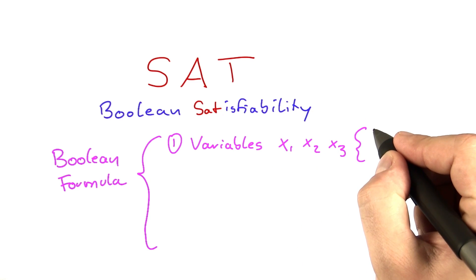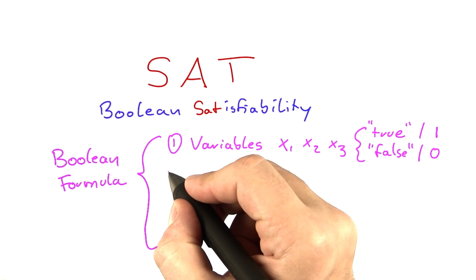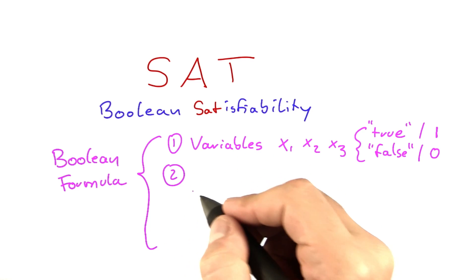It can either be true, which is sometimes also written as a 1, or it can be false, which is sometimes also written as a 0.